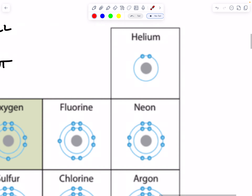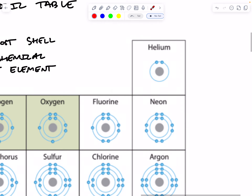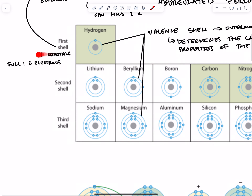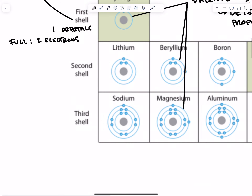Whereas helium has two electrons, so it's really happy just on its own. It's part of a group of elements known as the noble gases, which just like to stand alone — they do not want to form bonds with any other elements. The first shell only has one orbital, so it needs two electrons to fill. The second and third shells both have four orbitals, so they're full with eight electrons.